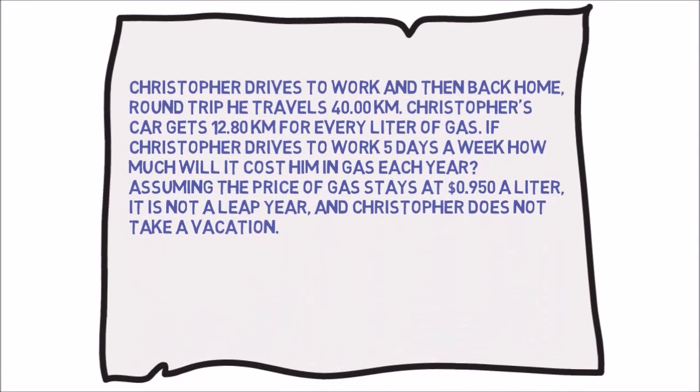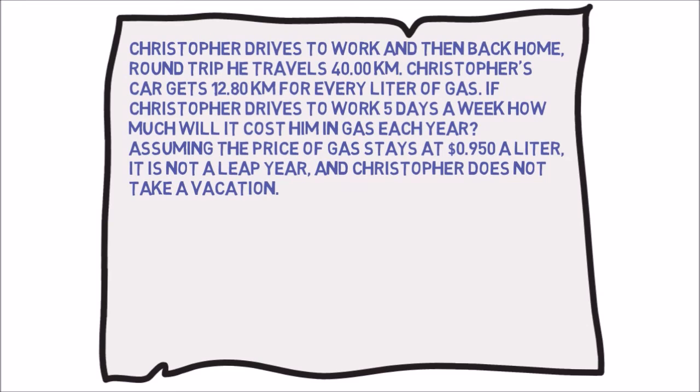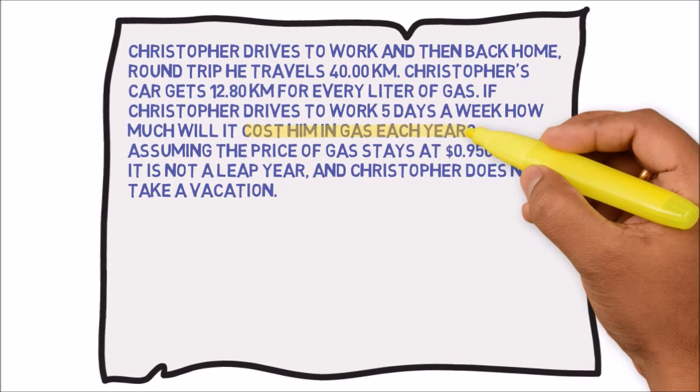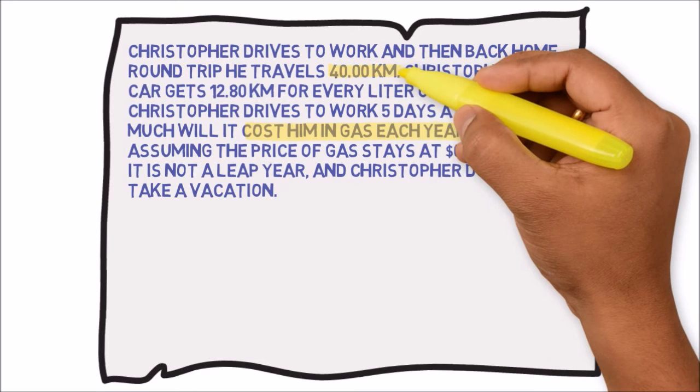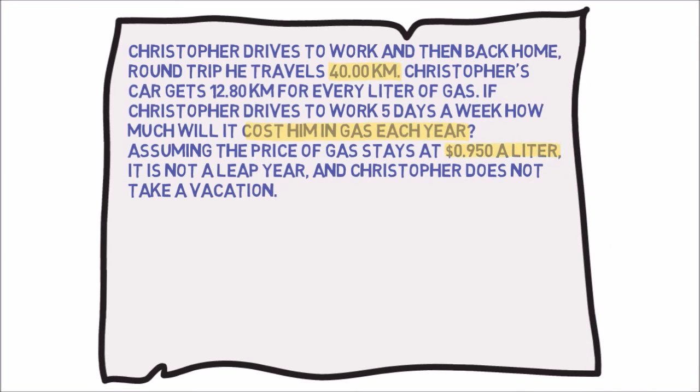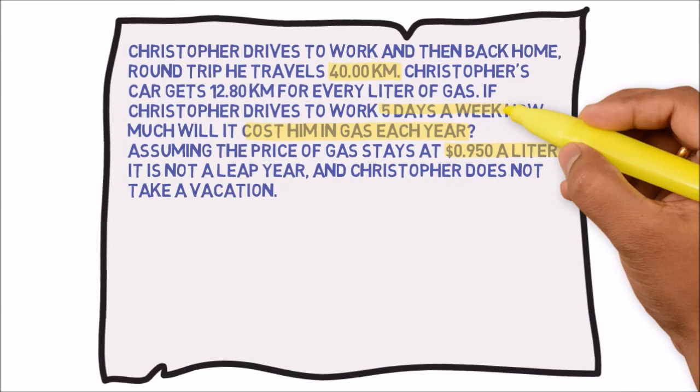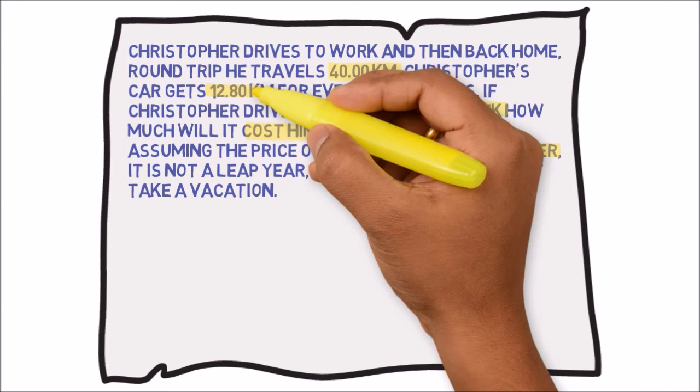Let's apply these steps to a problem. Christopher drives to work and then back home. Round trip, he travels 40 kilometers. Christopher's car gets 12.8 kilometers for every liter of gas. If Christopher drives to work five days a week, how much will it cost him in gas each year? Assuming the price of gas stays at 95 cents a liter, it is not a leap year and Christopher does not take vacation. The problem is asking for the cost of gas paid by Christopher each year. The units for the solution will therefore be dollars per year. What information is provided by the problem? The distance is 40 kilometers per day and the cost of gas is 95 cents per liter. The amount driven is five days per week and the efficiency of the car is 12.8 kilometers per liter.